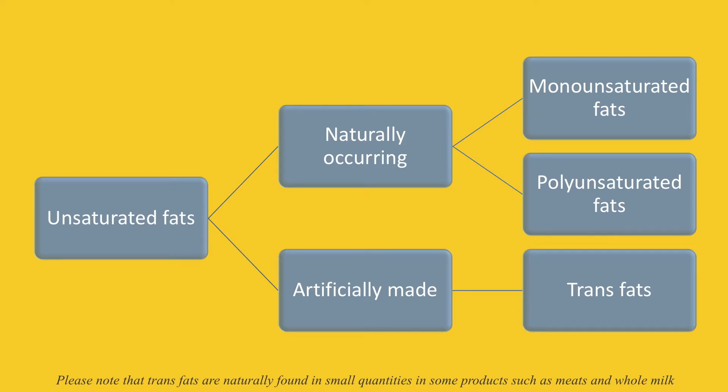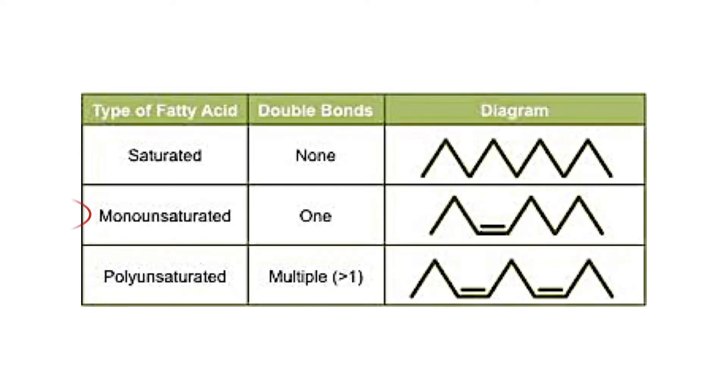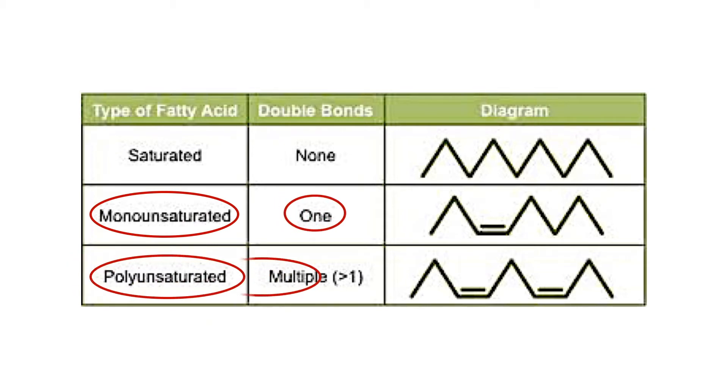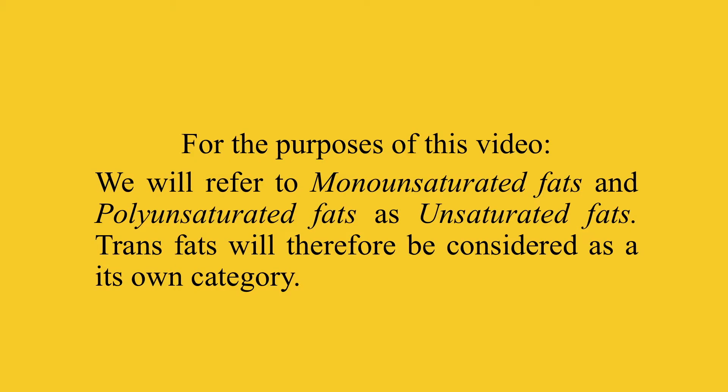Naturally occurring and artificially made trans fats are metabolized differently by the body. A chart helps differentiate between monounsaturated fatty acids and polyunsaturated fatty acids. To better understand how trans fats compare to other types, we will group monounsaturated and polyunsaturated fatty acids together and refer to them as unsaturated fats from this point onwards.